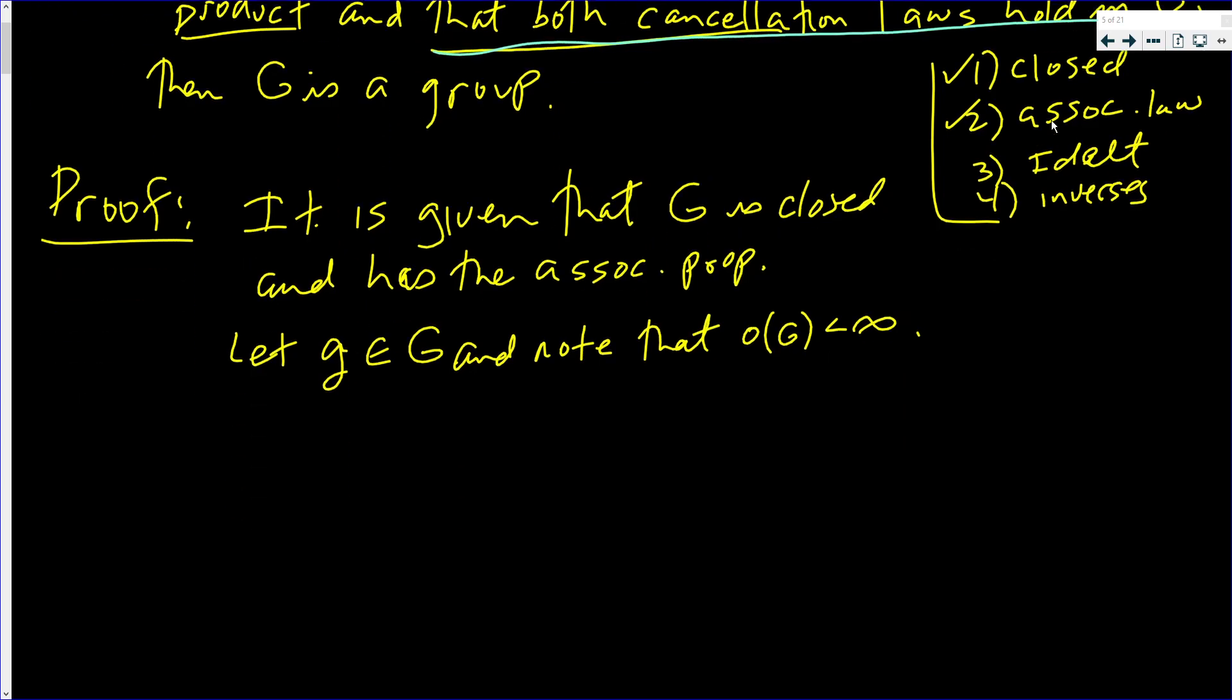So how about we consider the set S. Consider S, which is g, g squared, g cubed, g to the fourth, etc. This here is in G, because G is closed.